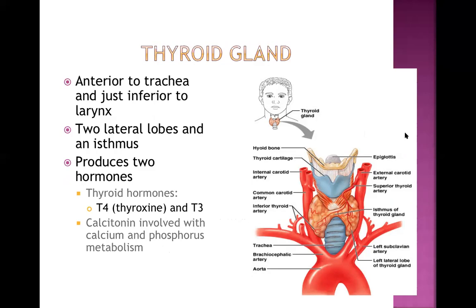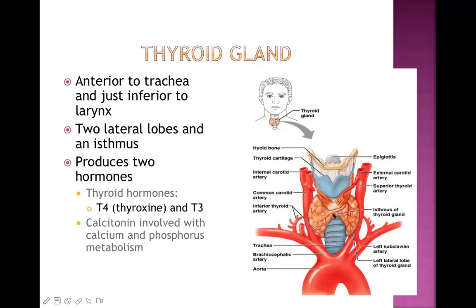Before going into the details of the disease, let's talk about the thyroid gland. The normal location is at the neck, in front of the trachea. You can see the thyroid cartilage and hyoid bone. The thyroid gland has two lobes - right and left - connected by a structure called the isthmus. The isthmus is present anterior to the cricoid cartilage and the first tracheal ring.